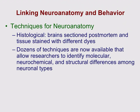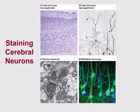To look at neuroanatomy, we can take a histological approach — taking a postmortem brain, slicing it into very thin slices, and staining the tissue with different dyes to visualize different kinds of neurons or chemicals under a microscope. There are many techniques to look at different molecular, neurochemical, and structural differences across neurons, depending on the stain, dye, and technique used.